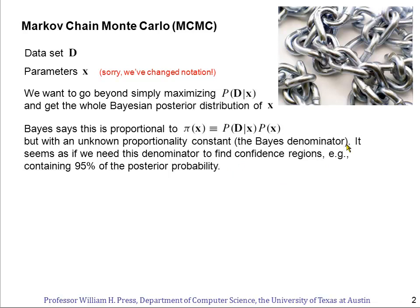This gives not P of X, but what we're going to call pi of X, which is the probability of the parameters but with an unknown proportionality constant. That's the Bayes denominator. Now you'd think that to get anywhere we'd have to know what this denominator is. To find confidence regions, regions containing 95% of the posterior probability. And to find the Bayes denominator you'd think we'd have to evaluate the probability of the data given X over the whole large multidimensional space of possible X's. And that would be impossible.